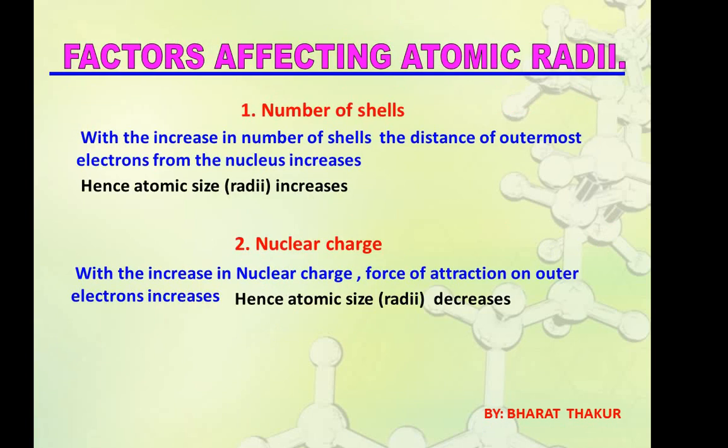Now we are going to study the factors which affect the atomic radius. The first factor is the number of shells. With an increase in the number of shells, the distance of outermost electrons from the nucleus increases, and therefore atomic size also increases. The second factor is nuclear charge. With an increase in nuclear charge, the force of attraction on the outermost electrons increases, so they are attracted towards the nucleus, and hence atomic size decreases.